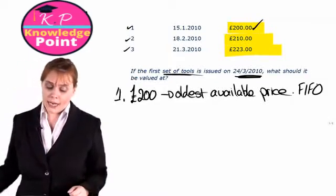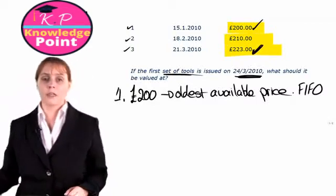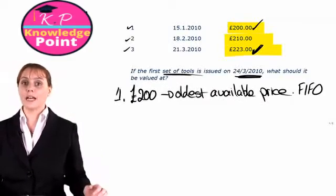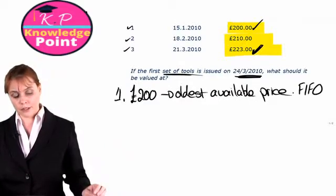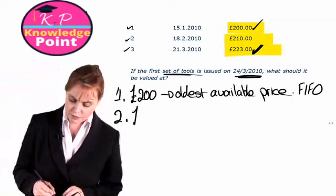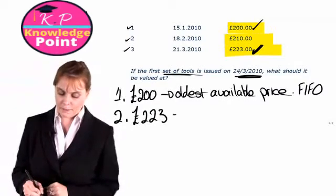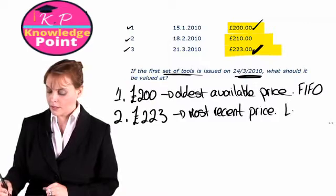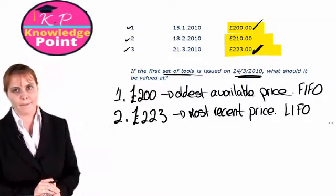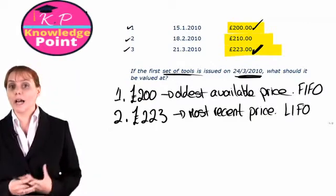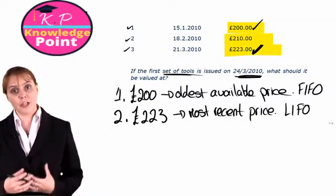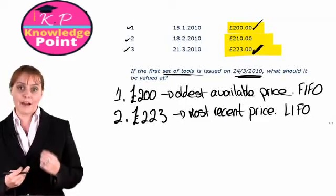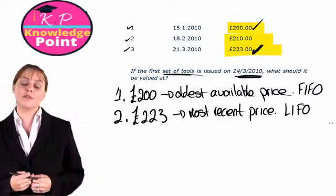Or we might say the most recent price was 223 pounds. This is the true current value of the tools, so that's how much we are going to charge our production department. Option two then is to value the issue at 223 pounds, which is the most recent price. This is the last in, first out method, or the LIFO method. Under the LIFO method, when we are issuing materials to production, we issue the most recently purchased material available and use that purchase price to value the issue.